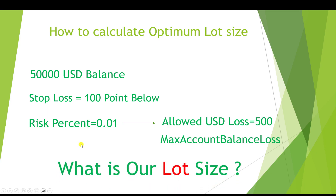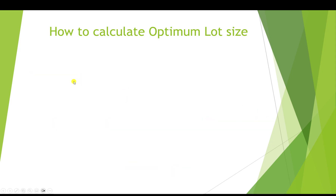In this scenario, what should our lot size be? If our balance is $50,000, the stop loss is 100 points below the entry point, and we don't want to risk more than 1%, what lot size should we open the order with so that when we hit the stop loss we don't lose more than $500? Let's calculate it, but first, in order to reach the formula, we start with an example.